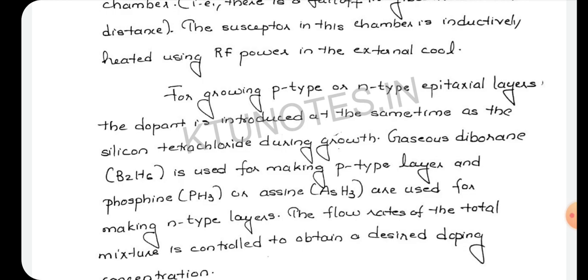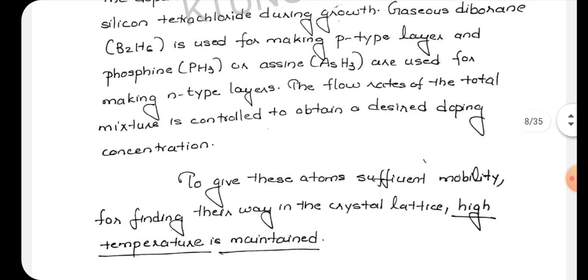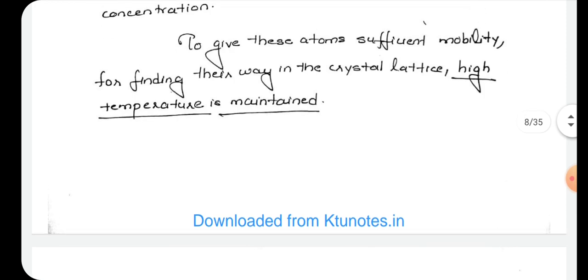Diborane (B2H6) is used for making p-type layers, while phosphine (PH3) or arsine (AsH3) are used for making n-type layers. The flow rates of the total mixture are controlled to obtain the desired doping concentration. High temperature gives these atoms sufficient mobility for finding their way in the crystal lattice.